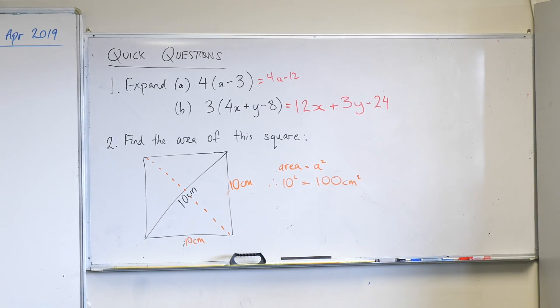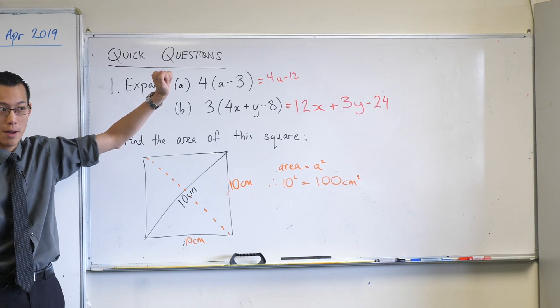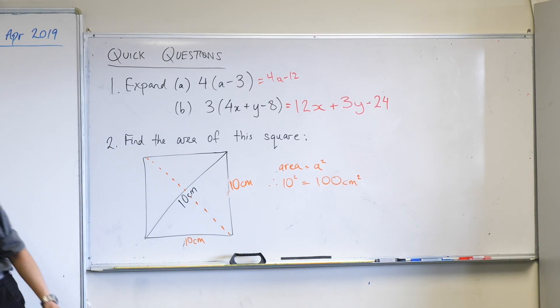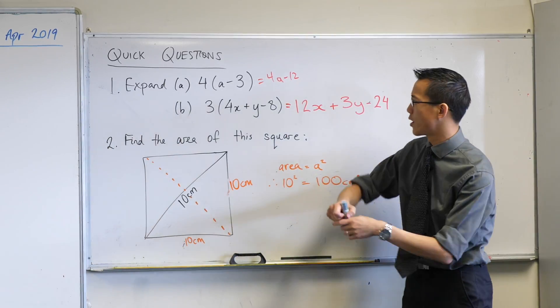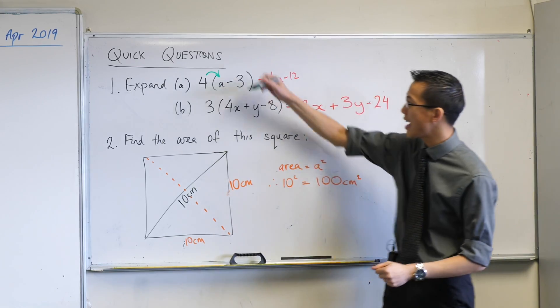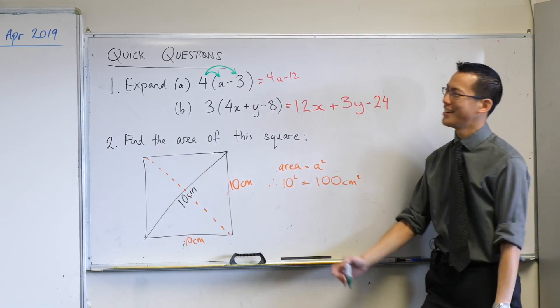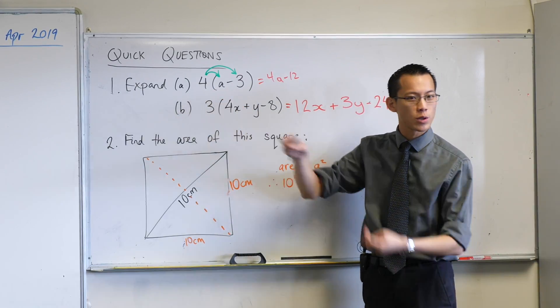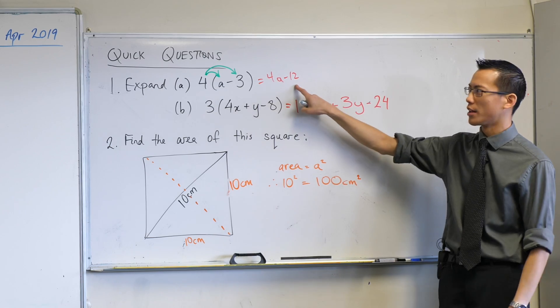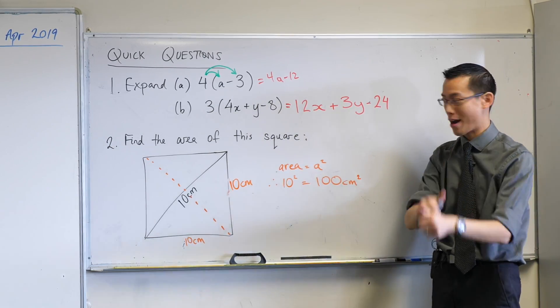So firstly we've got Hyeong's solution for 1a. Are you happy with this 4a minus 12? So what Hyeong has done is he's multiplied, and I often like to do this even on my book so that I can see the working. I have this 4 and it multiplies to the first thing inside the brackets and it also multiplies to the second thing. We call this the distributive law because that multiplication by 4 sort of distributes to everyone. And that's why we have 4 lots of a and this is 4 lots of minus 3, which is why the minus sign comes along for the ride.